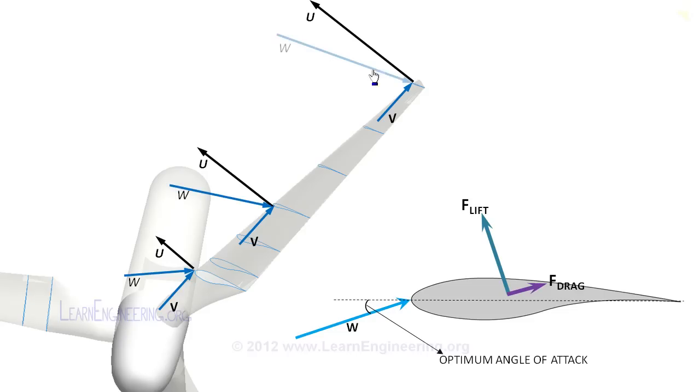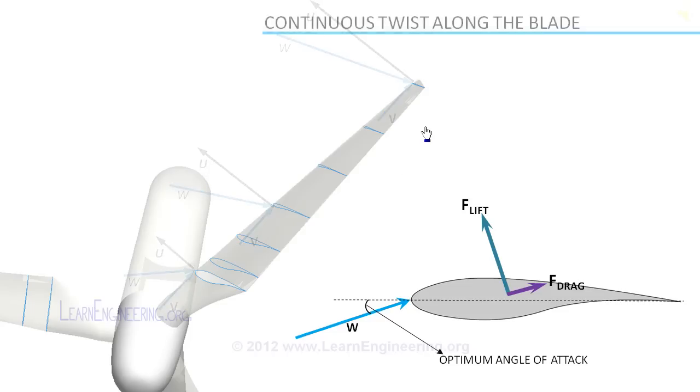Apparent velocity becomes more aligned to core direction as we move to tip. So there should be a continuous twist in blade, so that at every airfoil cross section angle of attack is optimum.